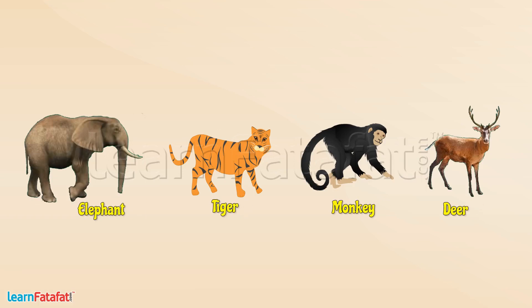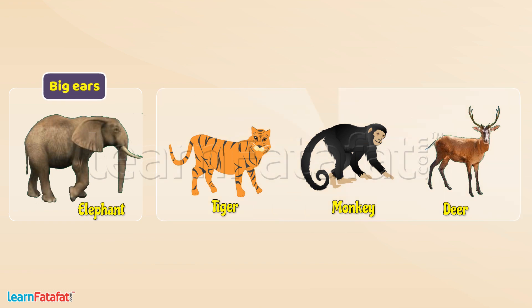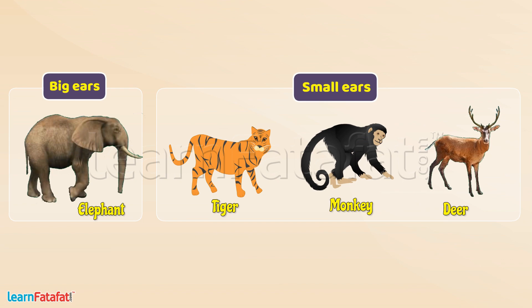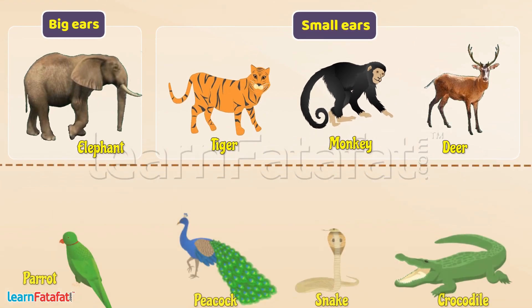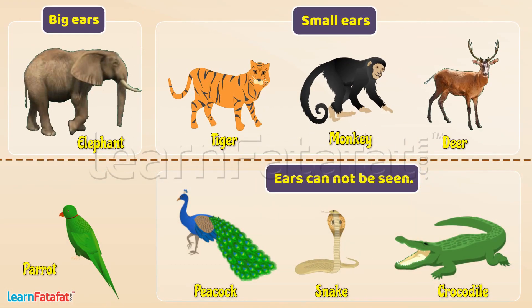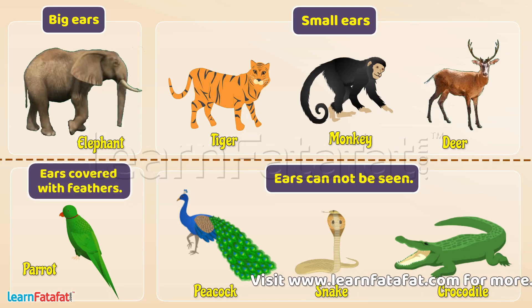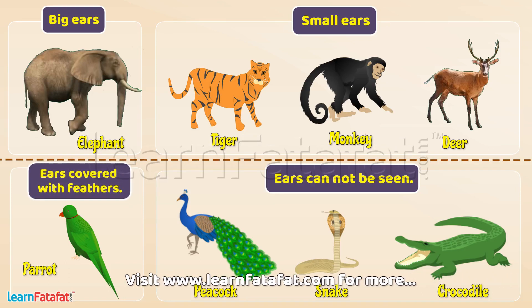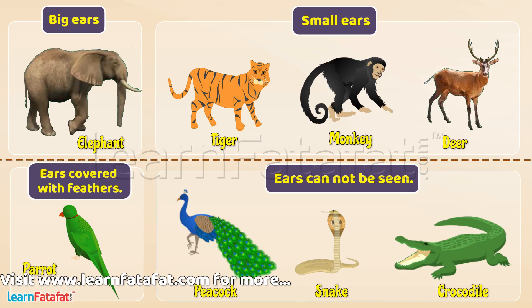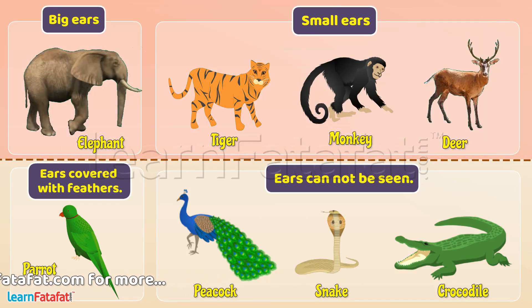Look at these animals — look at their ears. Some animals have big ears, some have small ears. Interestingly, ears of some animals cannot be seen because they are just small holes, and in birds these holes are covered with feathers.